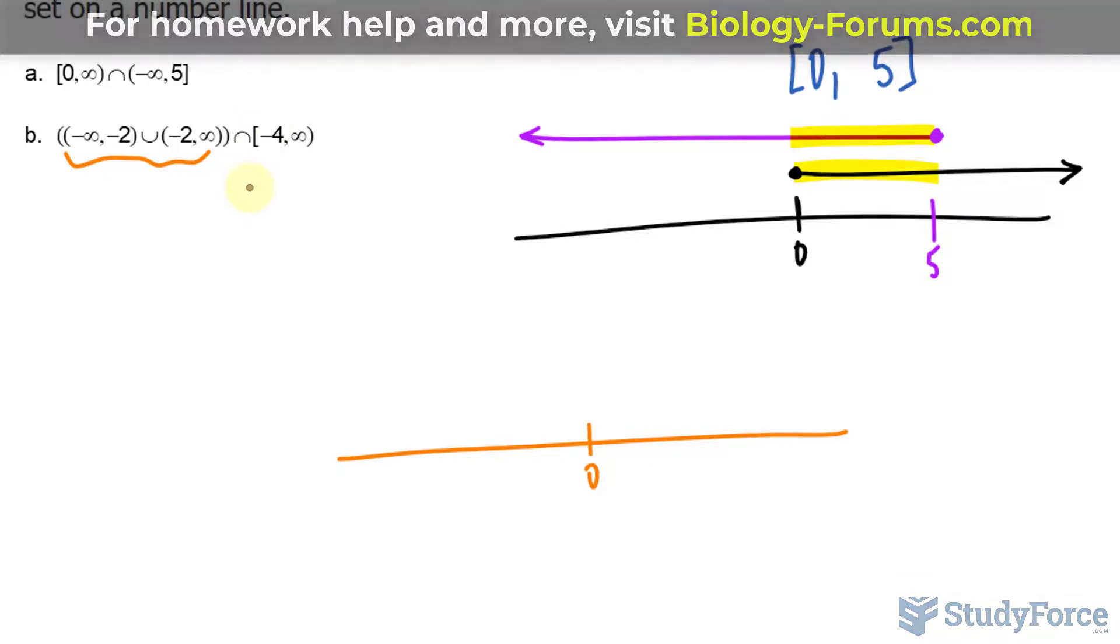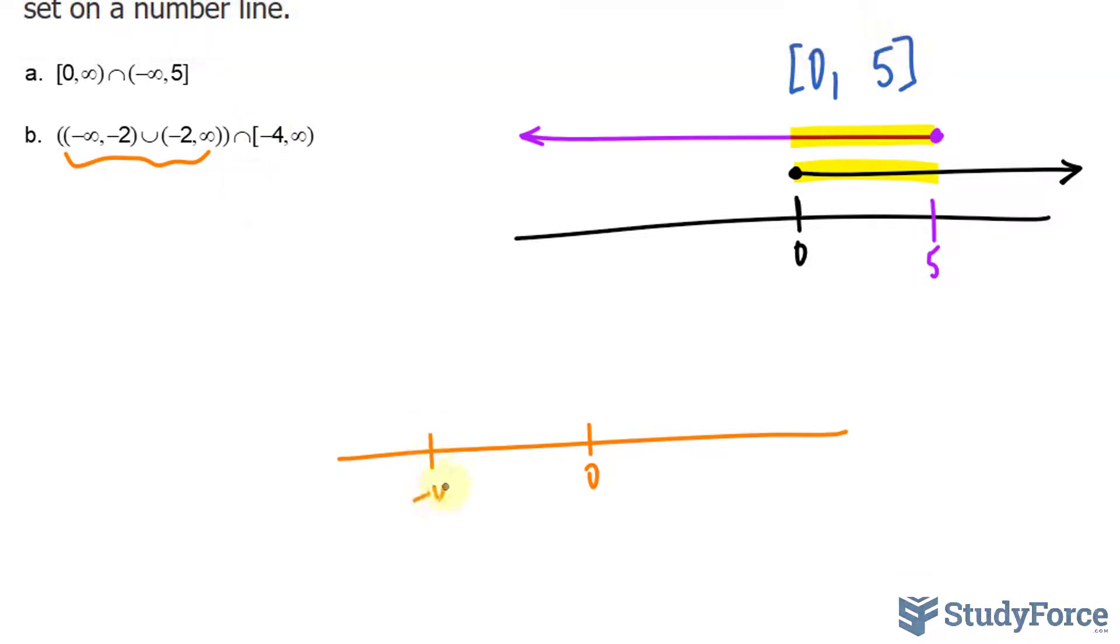negative four to positive infinity means that we start from negative four and it goes in this direction. This symbol tells us the union between these two sets.